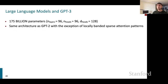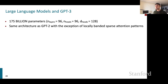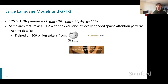GPT-3 has more or less the same architecture as GPT-2, except that to scale up attention computation it uses locally banded sparse attention patterns. Scaling up is not simply changing hyperparameters — it involves really non-trivial engineering and algorithms to make computations efficient. GPT-3 is trained on 500 billion tokens from Common Crawl, the Toronto Books Corpus, and Wikipedia.